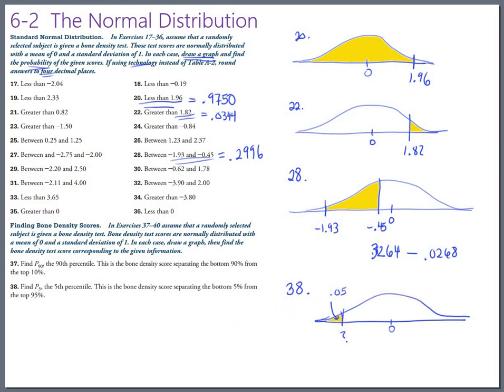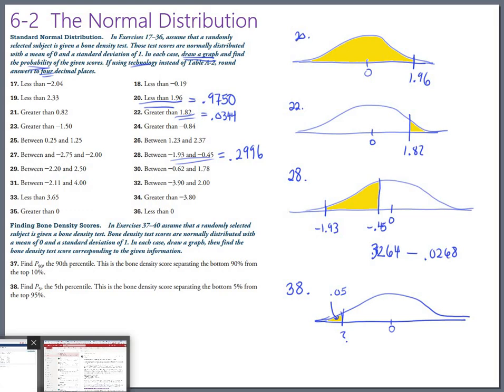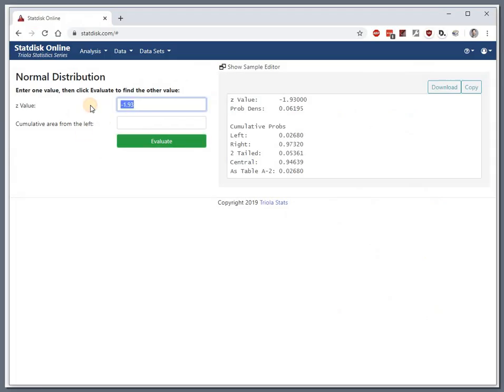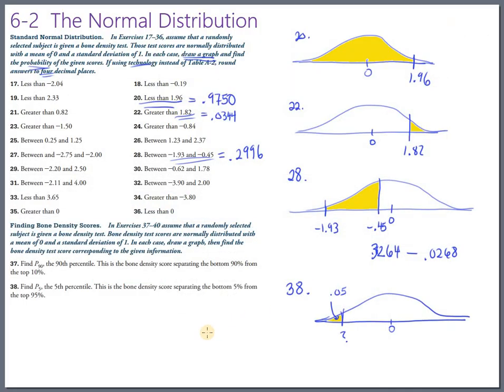And StatDisk is good at doing that also. So we go back. And rather than filling in a z-value, we fill in the cumulative area from the left, which is 0.05. And we evaluate that and see that's a bone density score and a z-value of negative 1.64 about. So equals negative 1.64. So let's put it over here. Equals negative 1.64. Okay.